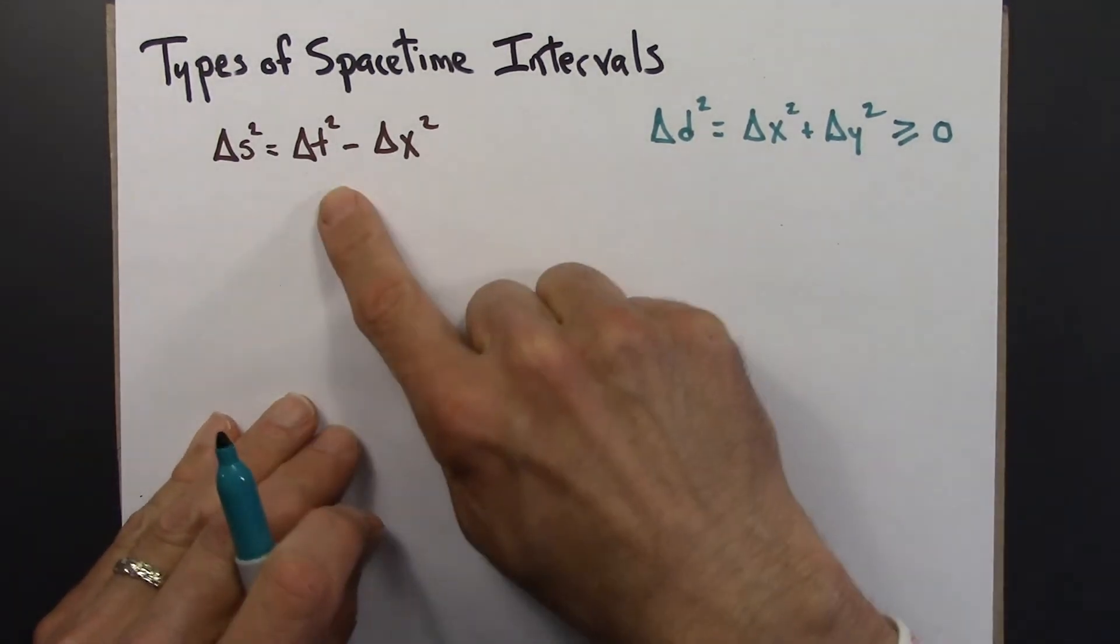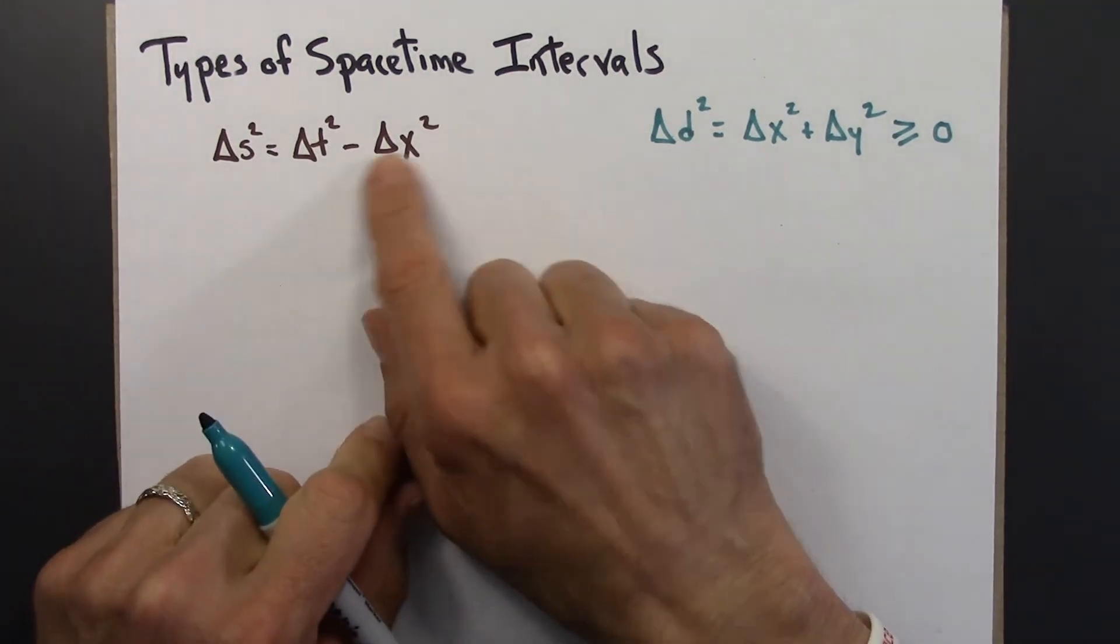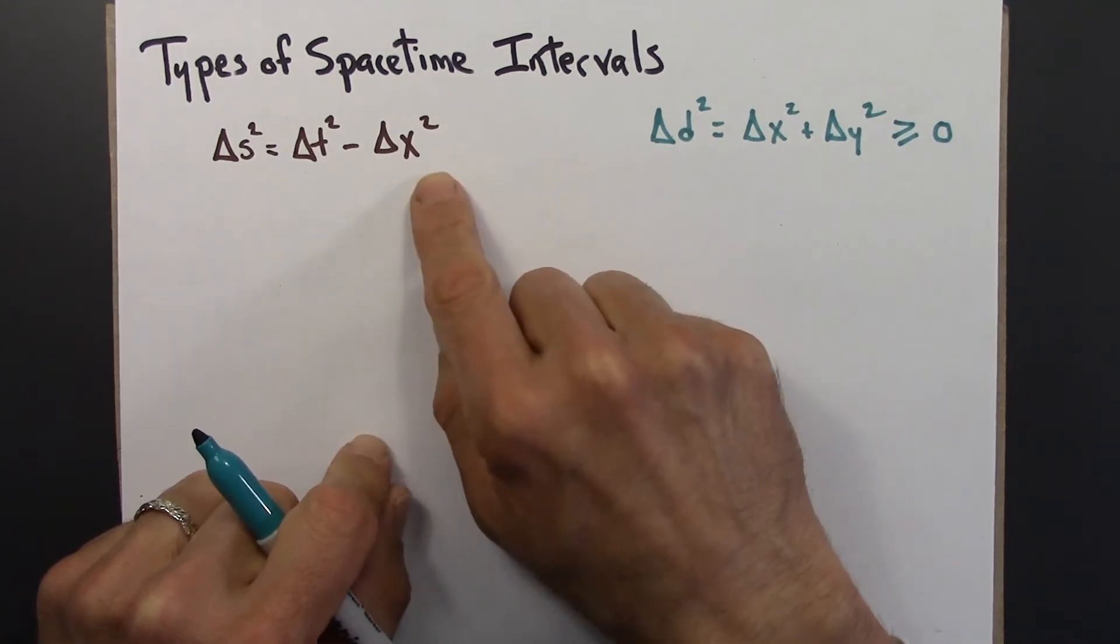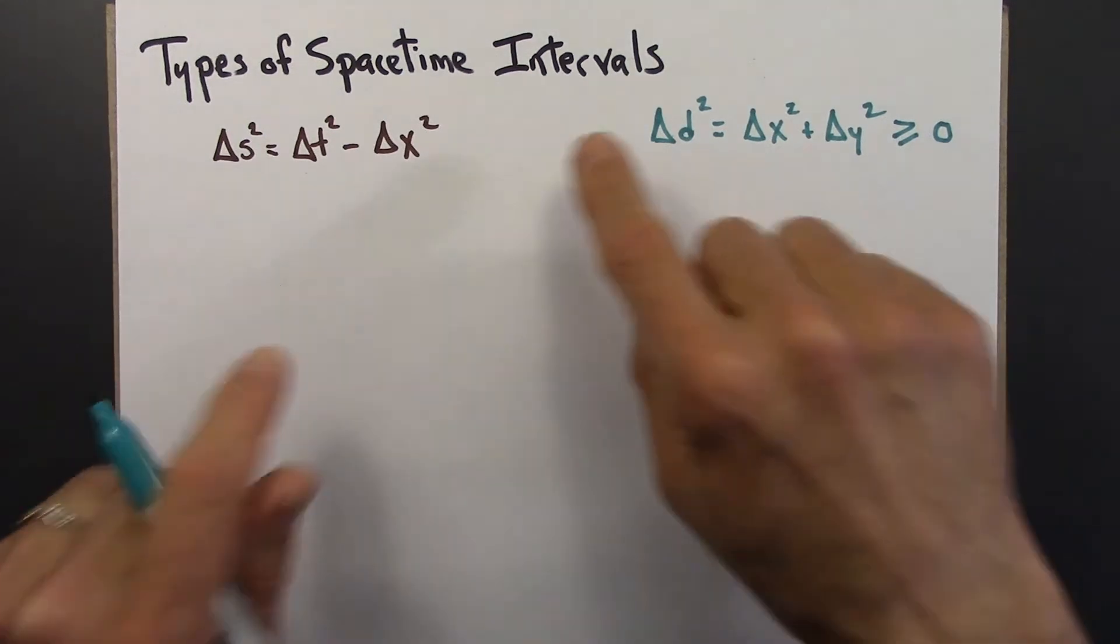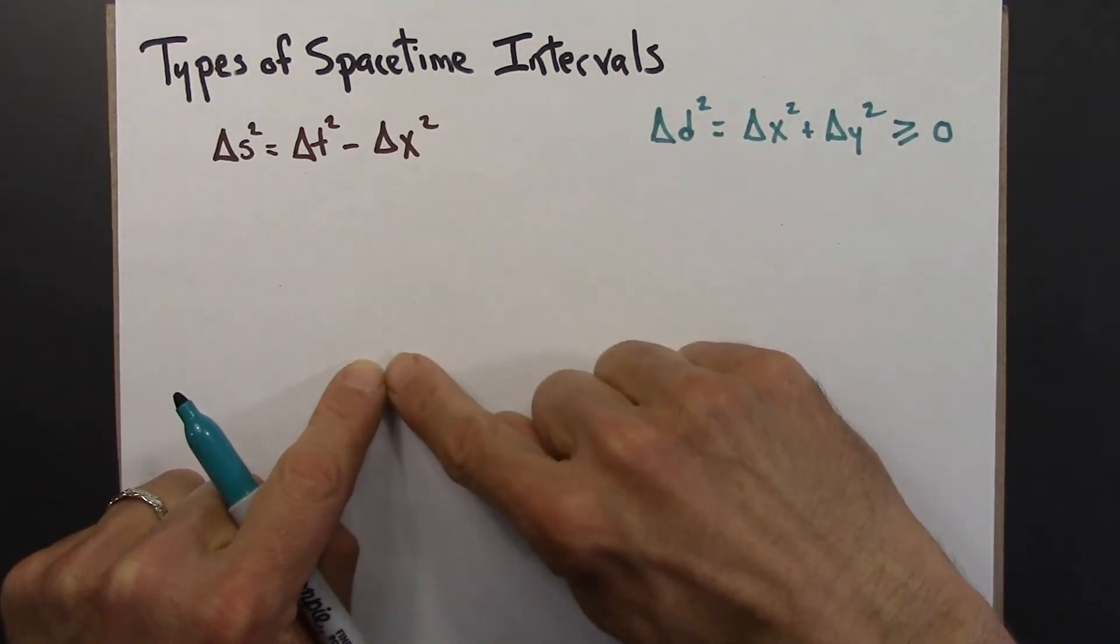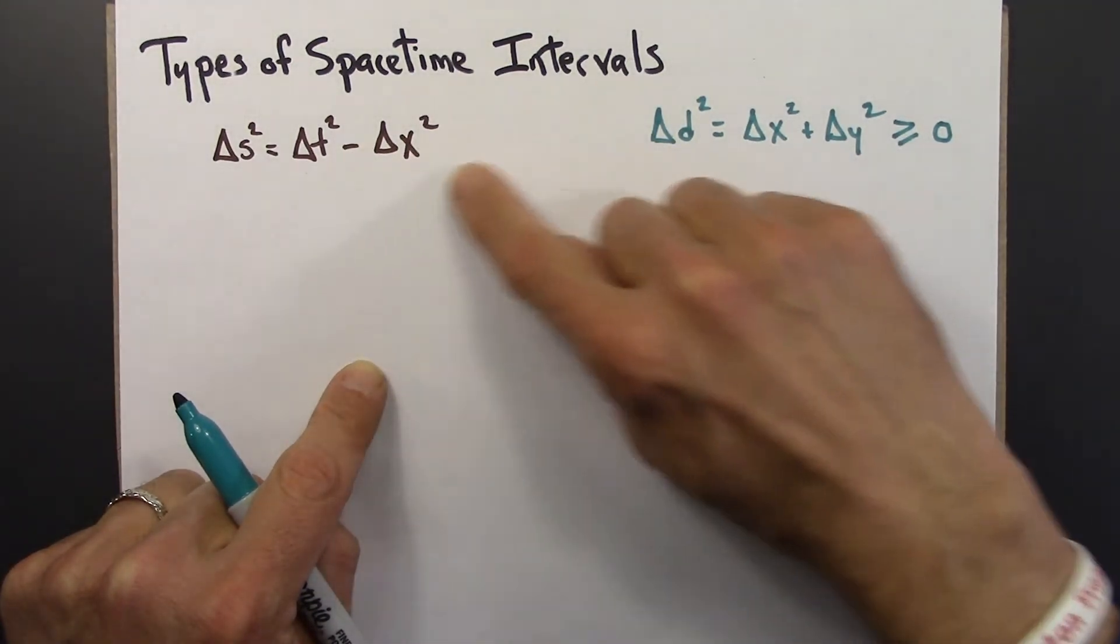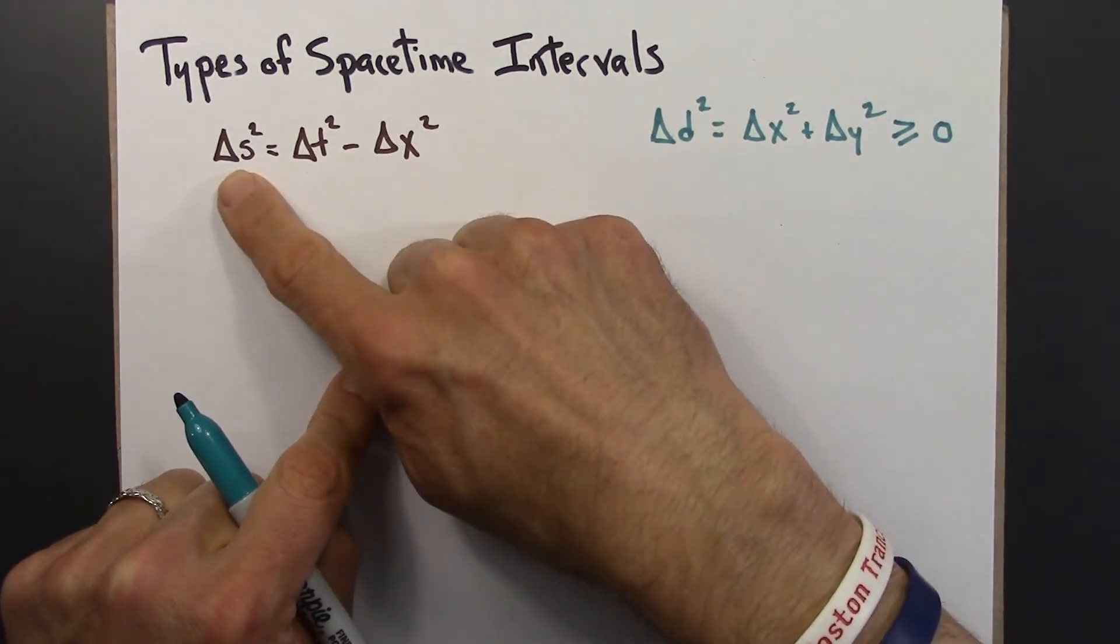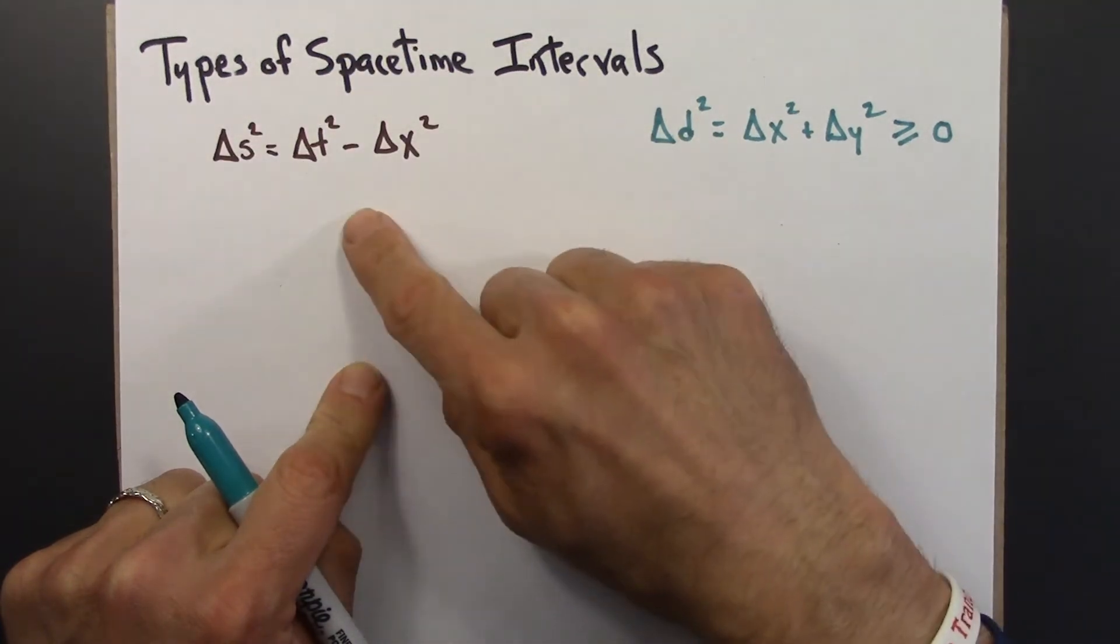Let's go back to thinking about the metric equation. Suppose t and x are equal, three seconds and three seconds. What that would mean is that there are two events in space-time, and they're separated by three units in the x-direction, three units in the t-direction. They're not the same event, but the delta s squared between them is zero. So we can have a non-boring zero here.